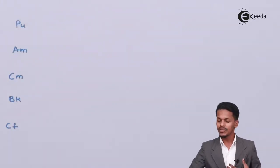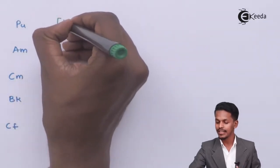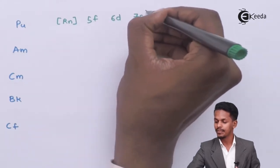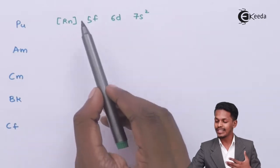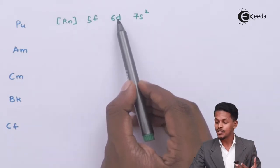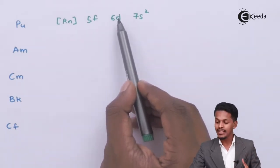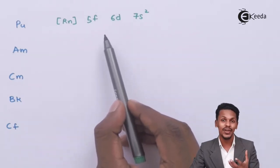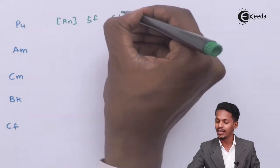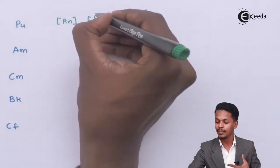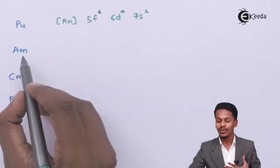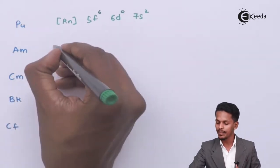For plutonium, the electronic configuration is [Rn] 5f⁶ 6d⁰ 7s². In neptunium we had 5f⁴ 6d¹, but for plutonium the d orbital is stable with zero electrons, so the extra electron does not go to 6d. Instead it fills the f orbital, making six electrons in 5f and leaving the 6d orbital vacant.